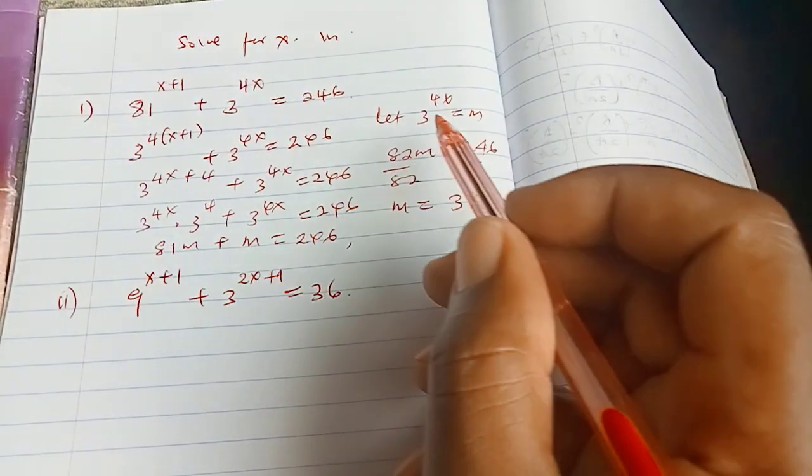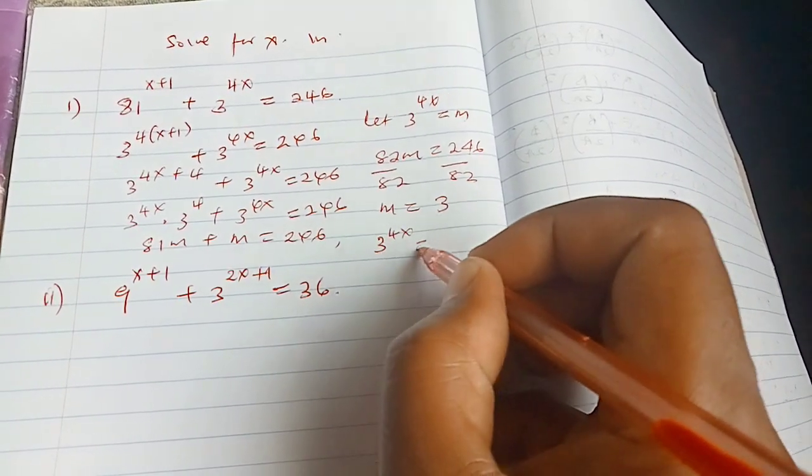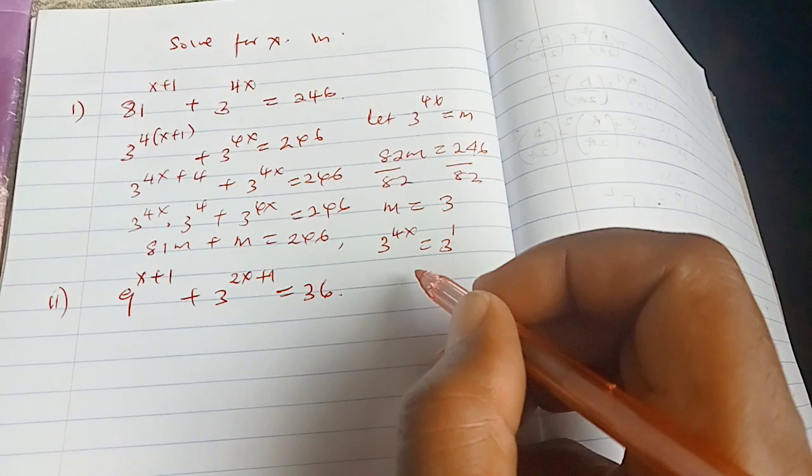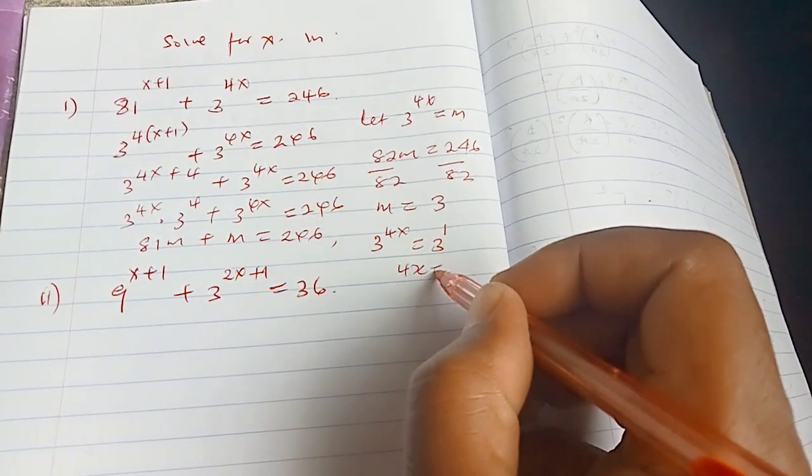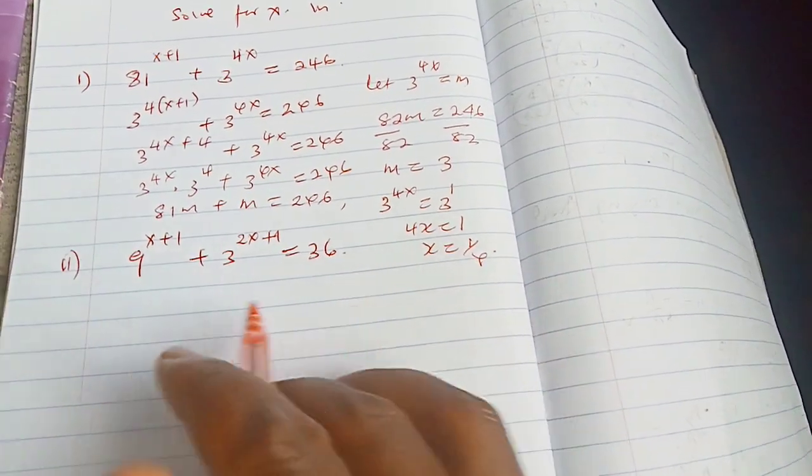So now going back to our assumption, we say that our m is 3 to the power of 4x, so we have 3 to the power of 4x equals to 3 to the power of 1 and so this goes without saying that 4x equals 1 and so x equals to a quarter. Sorry because you are running out of space.